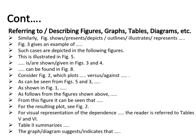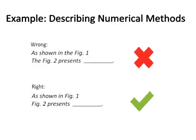For referring to or describing figures, graphs, tables, and diagrams, fifteen phrases are provided to fill in the blank spaces. Example of describing numerical methods: the wrong forms are 'as shown in the figure one' or 'the figure two presents.' The correct forms are 'as shown in figure one' or 'figure two presents' — without the article 'the' before figure numbers.